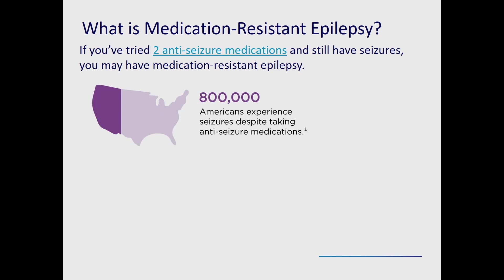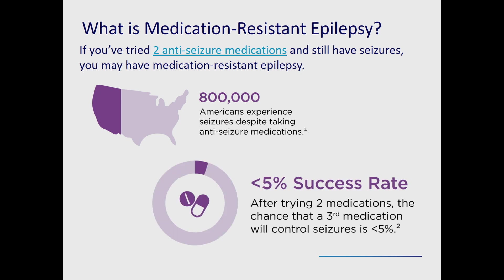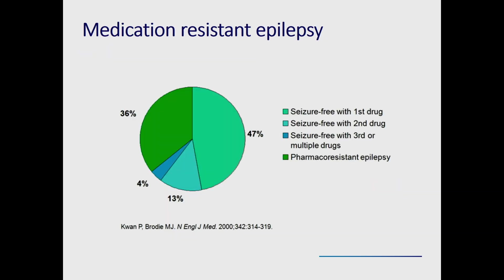800,000 Americans experience seizures despite taking anti-seizure medications. After trying two medications, the chance that a third medication will control seizures is less than five percent. The most referenced study, by Kwan and Brody, showed that about 50 percent of people have seizures controlled after the first medication, about 15 percent after the second, and then it becomes a diminishing piece of the pie — what we call pharmacoresistant or medication-resistant epilepsy.